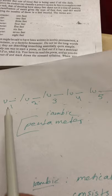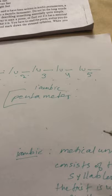Iamb means the unstressed-stressed syllables repeated five times in a poetic line, and this is the rule that Shakespeare followed in his sonnets, which is going to be explained later when we talk about Sonnet 18 by Shakespeare in a separate video.